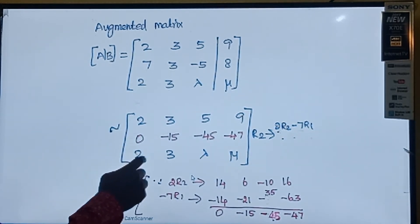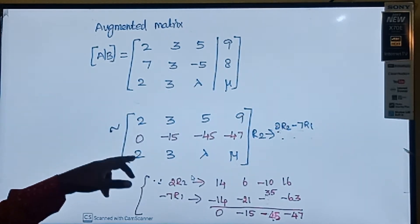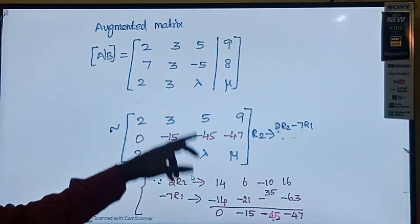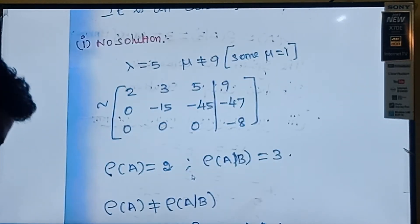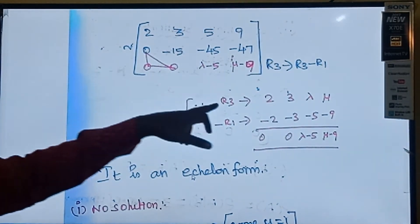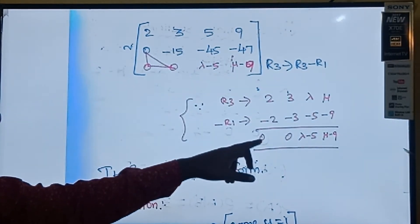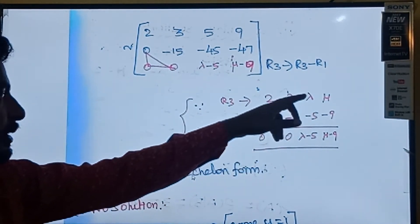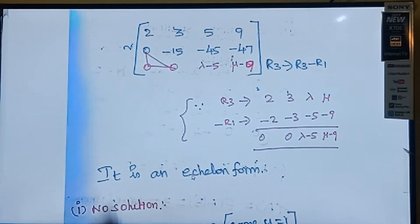Next, we have to make the third row's first and second elements equal to 0. R3 → R3 - R1. So: 2-2=0, 3-3=0, lambda-5, and mu-9. So the new R3 is [0, 0, lambda-5, mu-9]. That gives us the echelon form with lambda and mu.